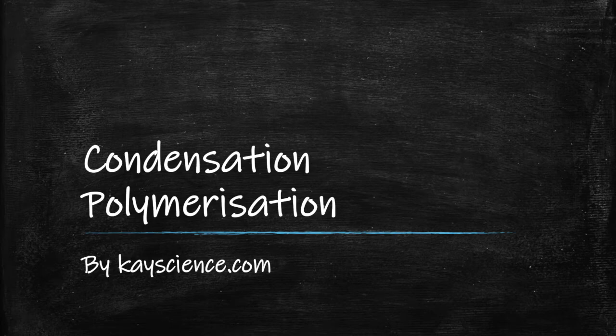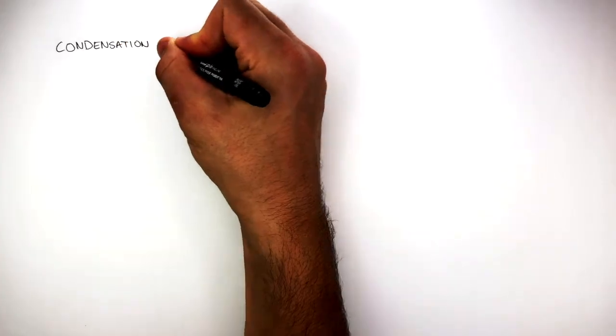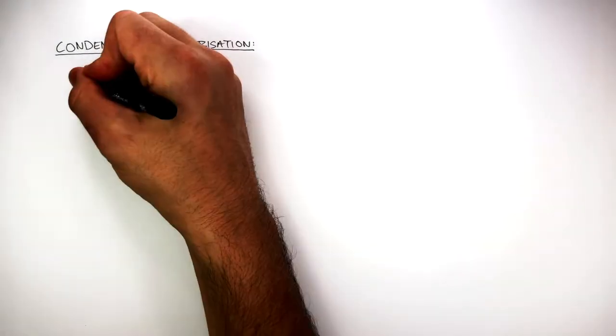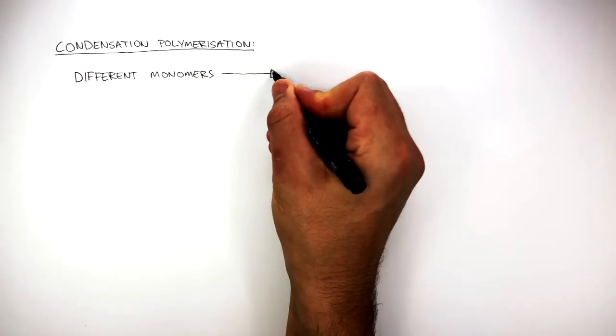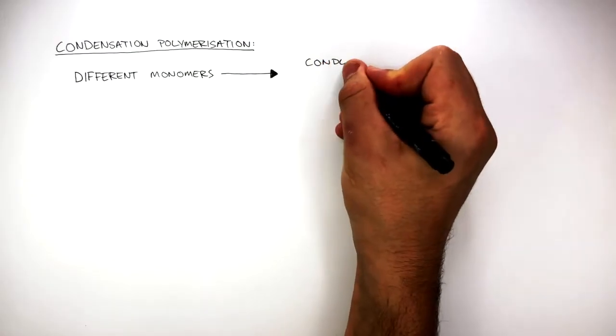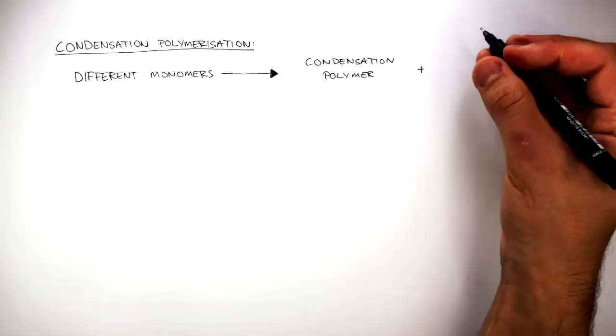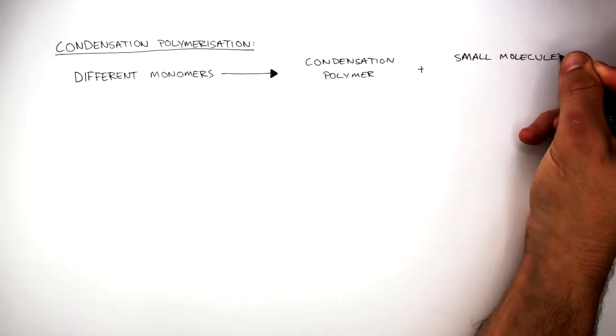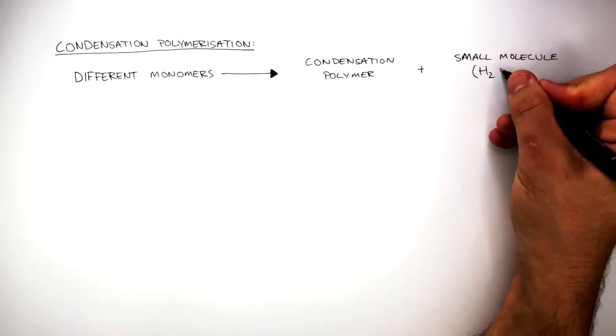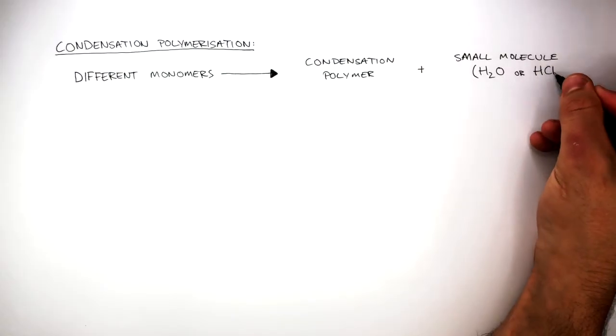Condensation polymerization by kscience.com. Condensation polymerization is a chemical reaction where different monomers react to form a condensation polymer and a small molecule such as water or hydrogen chloride.